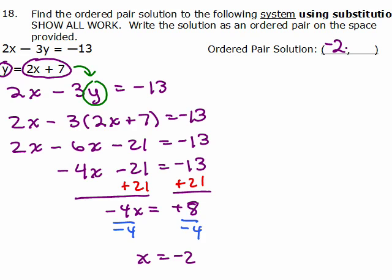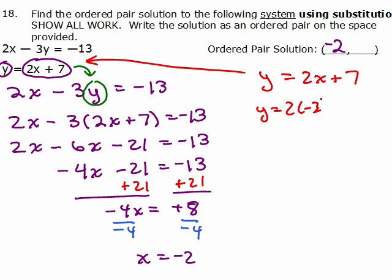Now that we know what X is, we can go back to here, right? So we know Y equals 2X plus 7 and now that we know what X is, we're going to plug that in. X is negative 2, so we have negative 4 plus 7 is 3. So now the other coordinate is 3.